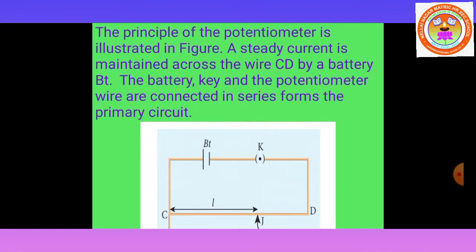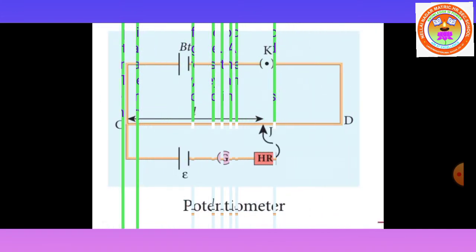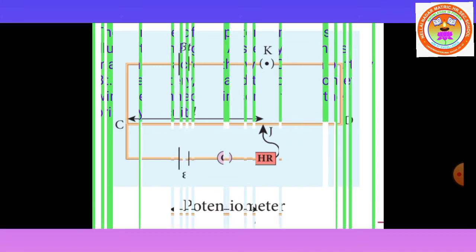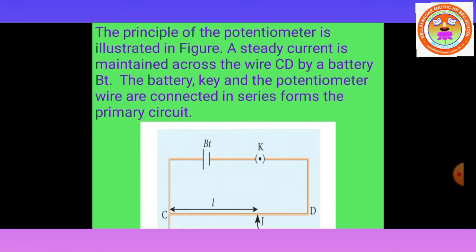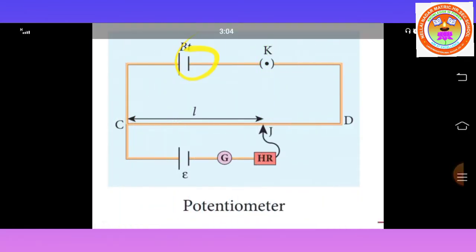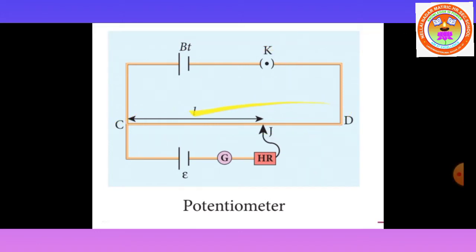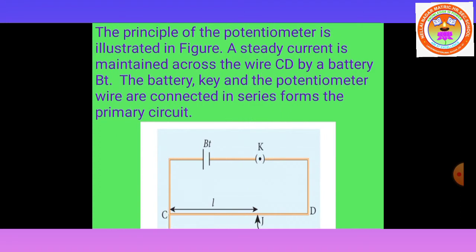The principle of the potentiometer is illustrated in the figure. A steady current is maintained across the wire CD by a battery. The battery, key, and the potentiometer wire are connected in series to form the primary circuit.